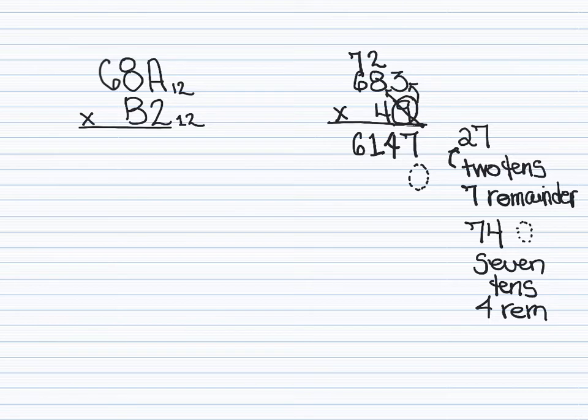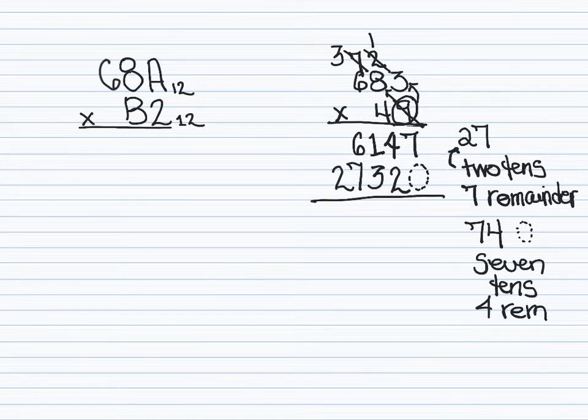So 40 times 3 is 120. And the way we would always think about it is 4 times 3 is 12. And again, that's 1 ten with 2 left over. And let's keep going here. 4 times 8 is 32, plus 1 is 33. So that's 3 tens with 3 left over. 4 times 6 is 24, plus 3 is 27. That's 2 tens with 7 left over.